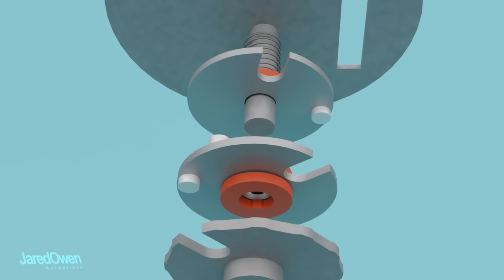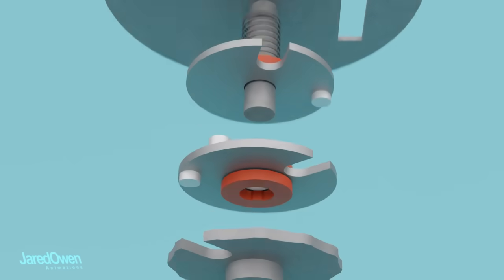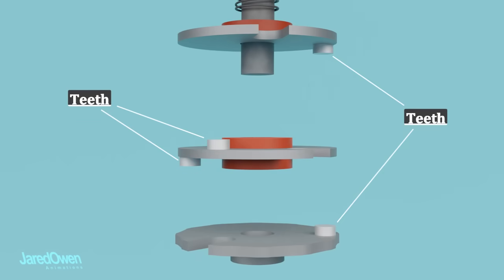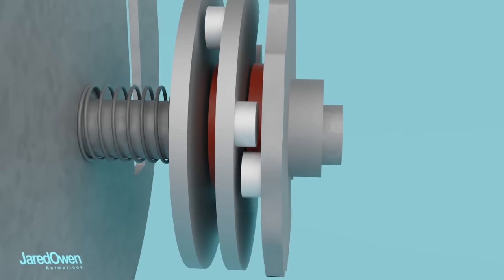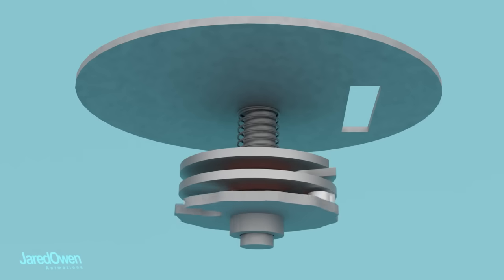Each cam has at least one of these teeth sticking off of it. You can see them better from this point of view. If we turn cam one far enough, the tooth on cam one will contact the tooth on cam two. And then if we keep turning, all three cams move together.